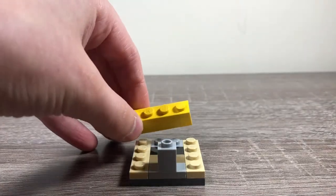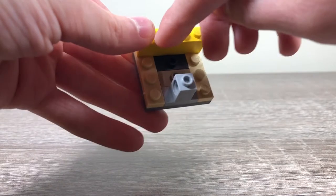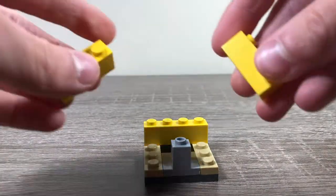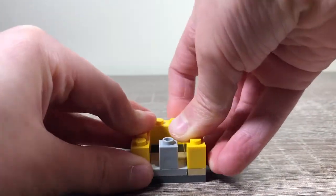Then we're going to take a one by four brick in whatever color and put it right there. One by four. Then take your one by threes and fill in those gaps.